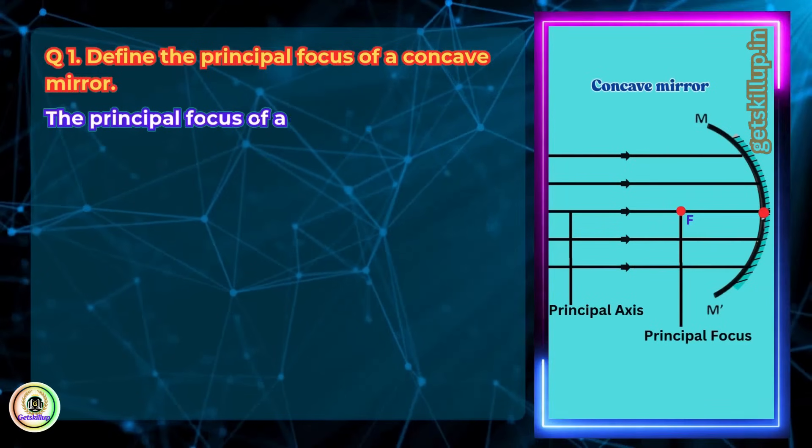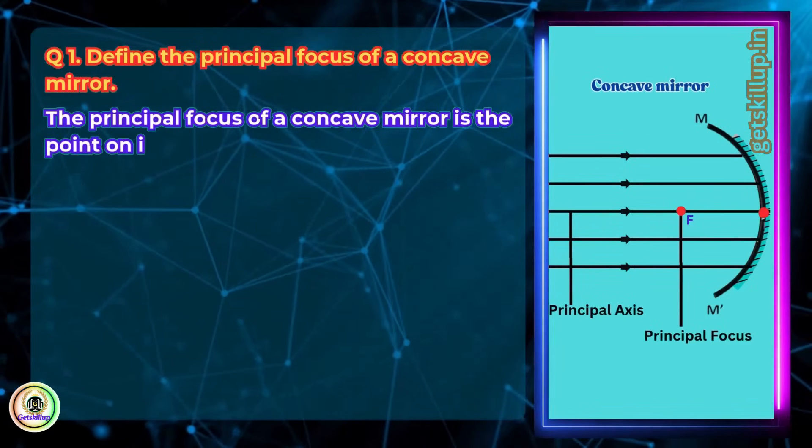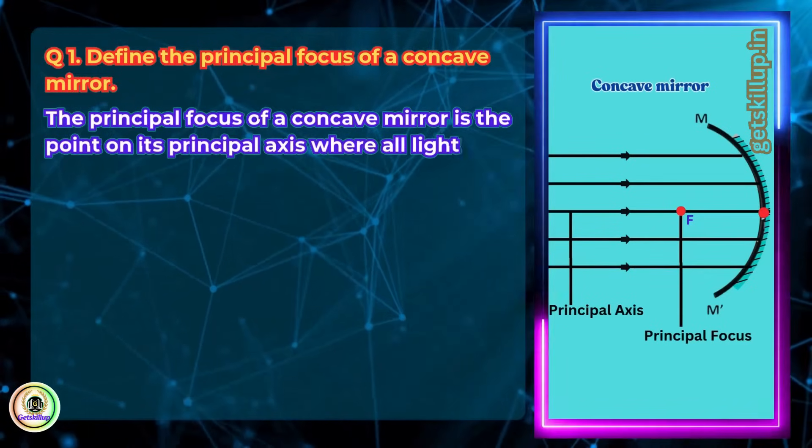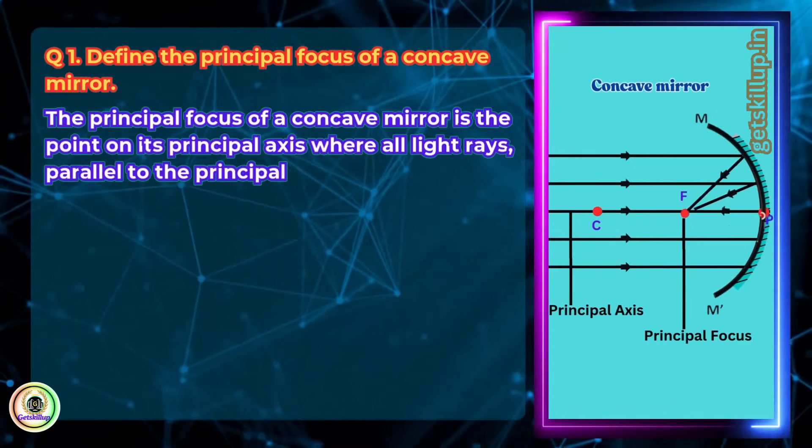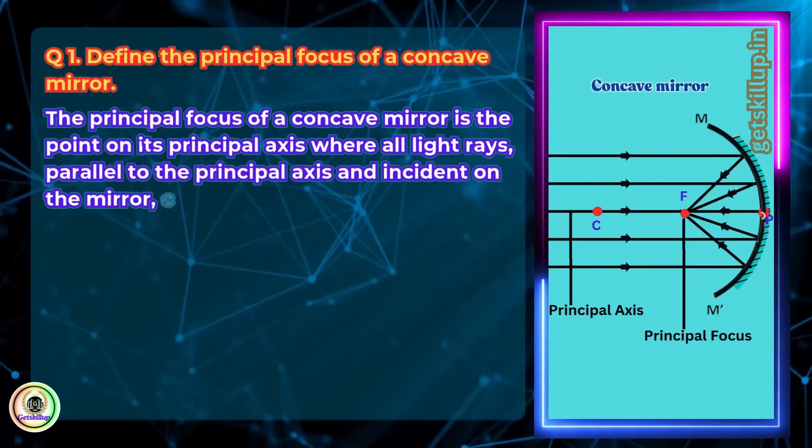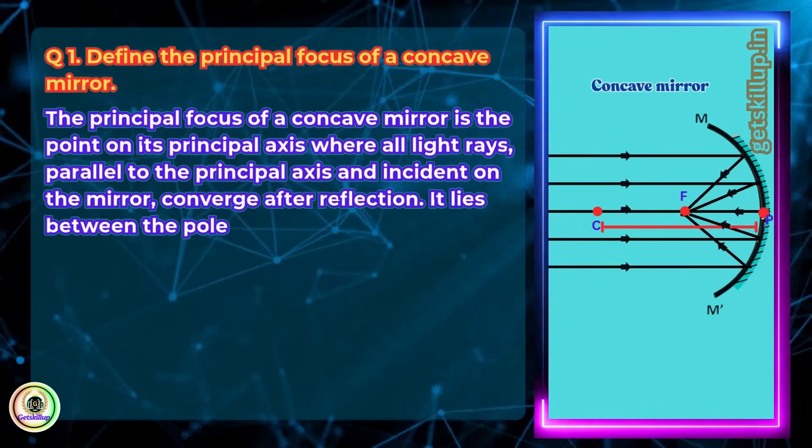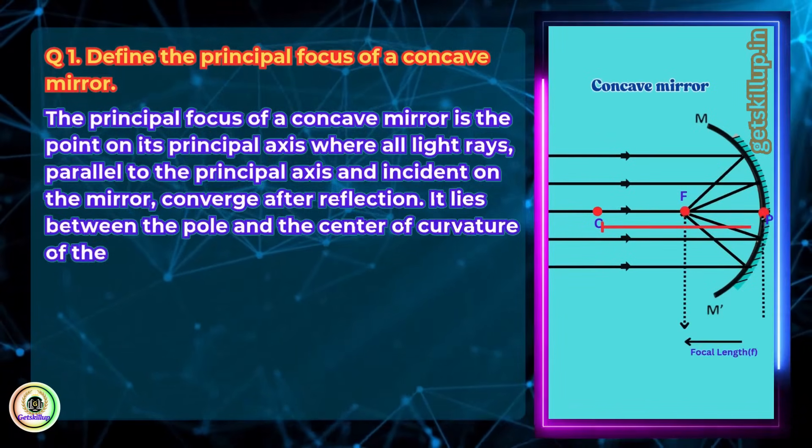The principal focus of a concave mirror is the point on its principal axis where all light rays parallel to the principal axis and incident on the mirror converge after reflection. It lies between the pole and the center of curvature of the mirror.